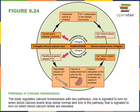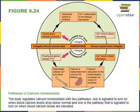Another function of parathyroid hormone is regulating the activity of the kidneys, where PTH stimulates calcium reabsorption in the kidneys, bringing calcium back into the blood so it is not lost in the urine. Parathyroid hormone also stimulates the activation of vitamin D in the kidneys. Vitamin D is first synthesized in the skin and becomes activated through multiple steps of hydroxylation in the liver and kidney. The final activation step in the kidney is stimulated by PTH, and then vitamin D stimulates calcium absorption in the small intestine. All of these functions work together to increase blood calcium concentration.